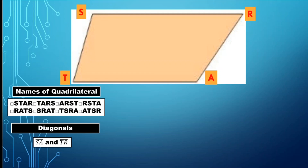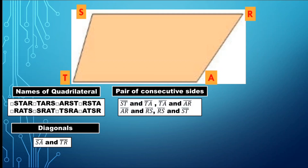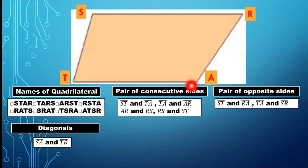Speaking of the pair of diagonals, what about the pair of consecutive sides? Starting from side ST, the consecutive side of ST is segment TA. Segment TA is consecutive to segment AR, and segment AR is consecutive to segment RS, while RS is consecutive to segment ST. So there are four pairs of consecutive sides. As for opposite sides, side ST is opposite to side RA, and segment TA is opposite to segment SR.